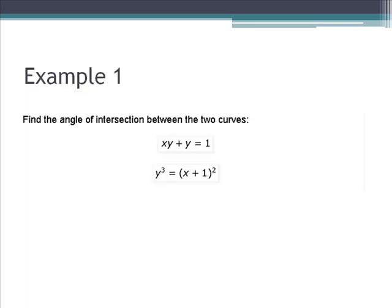Example: Find the angle of intersection between the two curves xy plus y equals 1, and y cubed equals the quantity of x plus 1 squared.